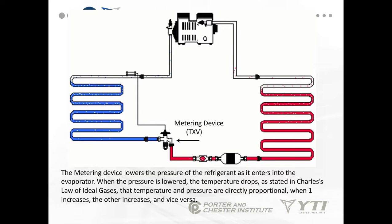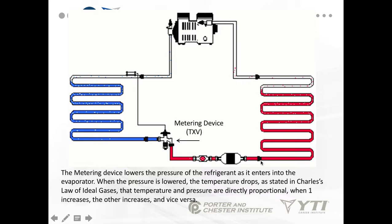The metering device is designed to lower the pressure of the refrigerant as it enters the evaporator. Coming out of the condenser, you have high-pressure liquid. The metering device acts like a finger over the end of a garden hose — it takes this high-pressure liquid and allows a little bit at a time to spray into the evaporator. That means the pressure in the evaporator is much lower than the pressure in the liquid line behind it.